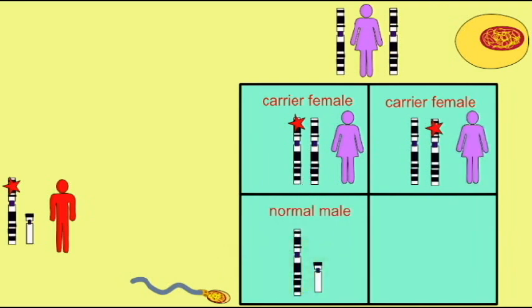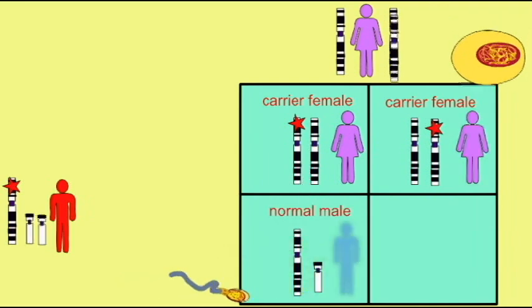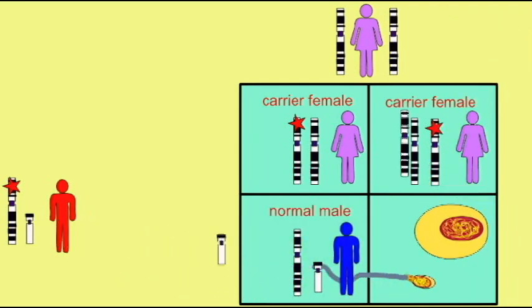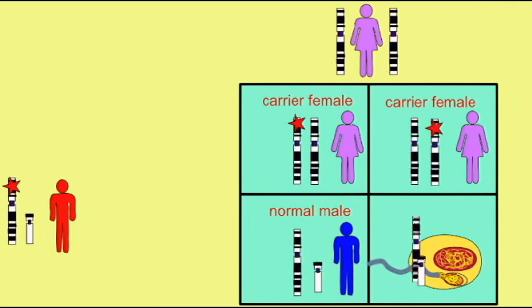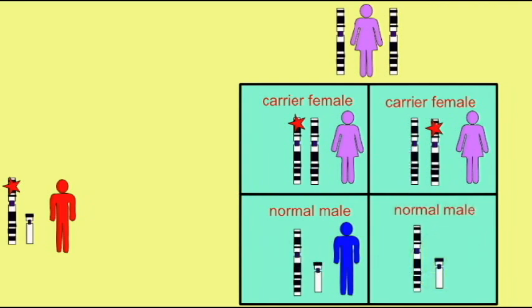The male children would receive a normal X chromosome from their mother. So in this cross, all of the female children will be carriers but have a normal phenotype, and all of the males would be normal.